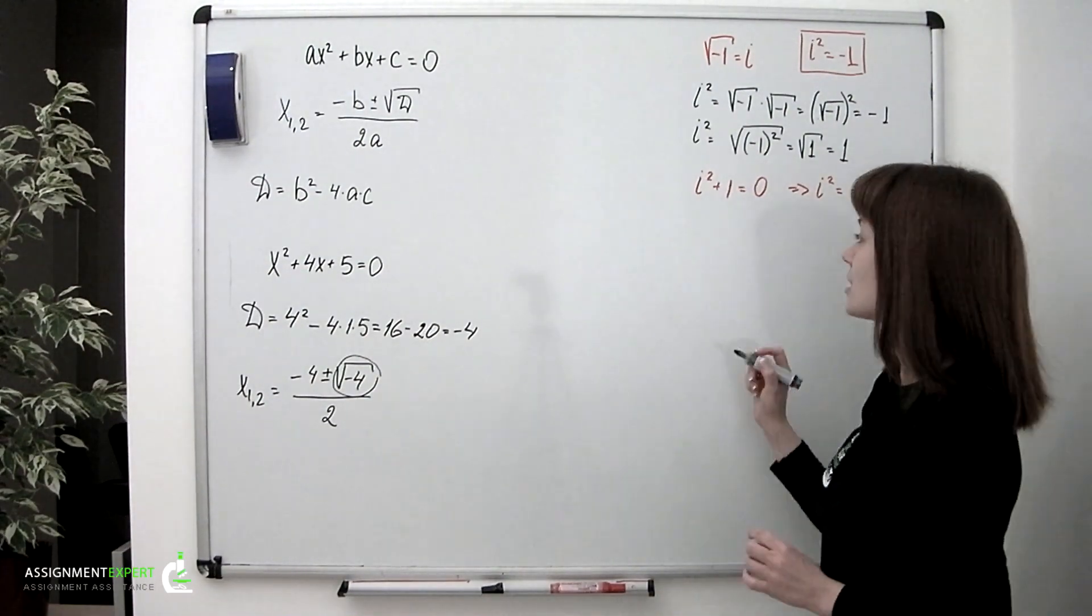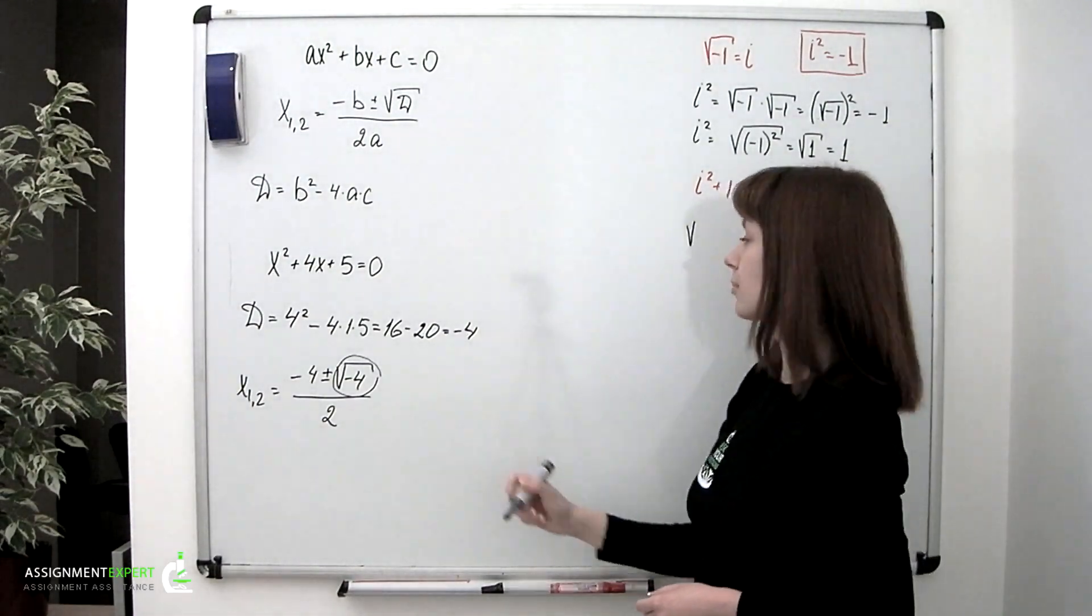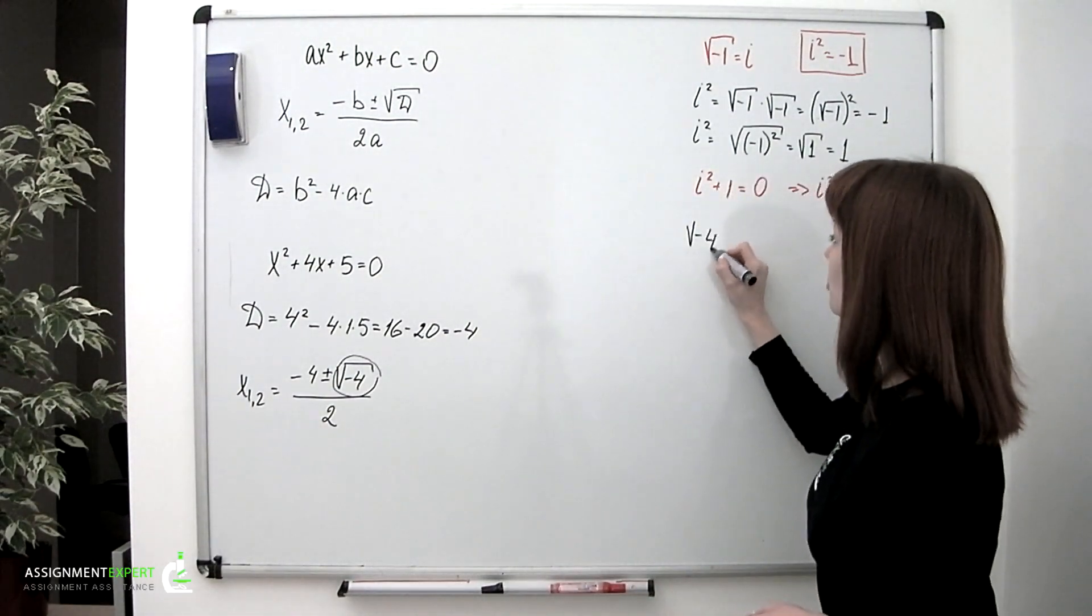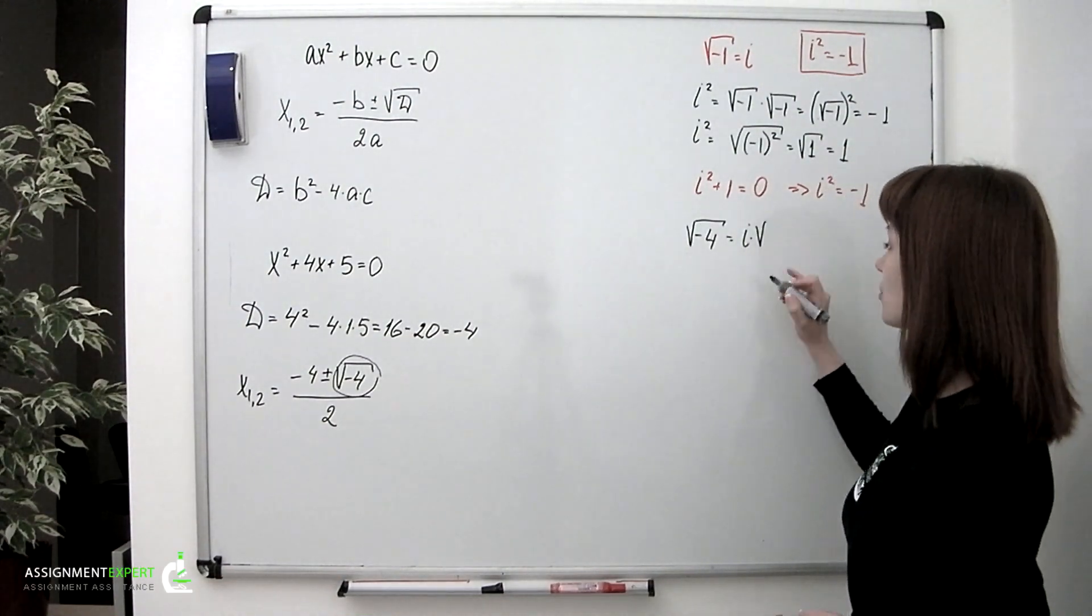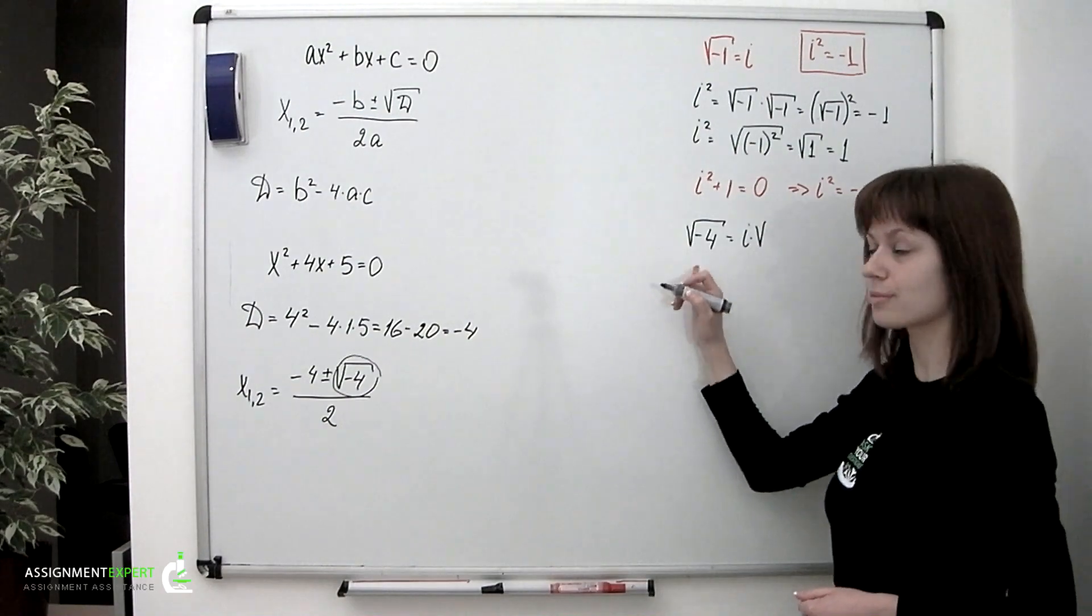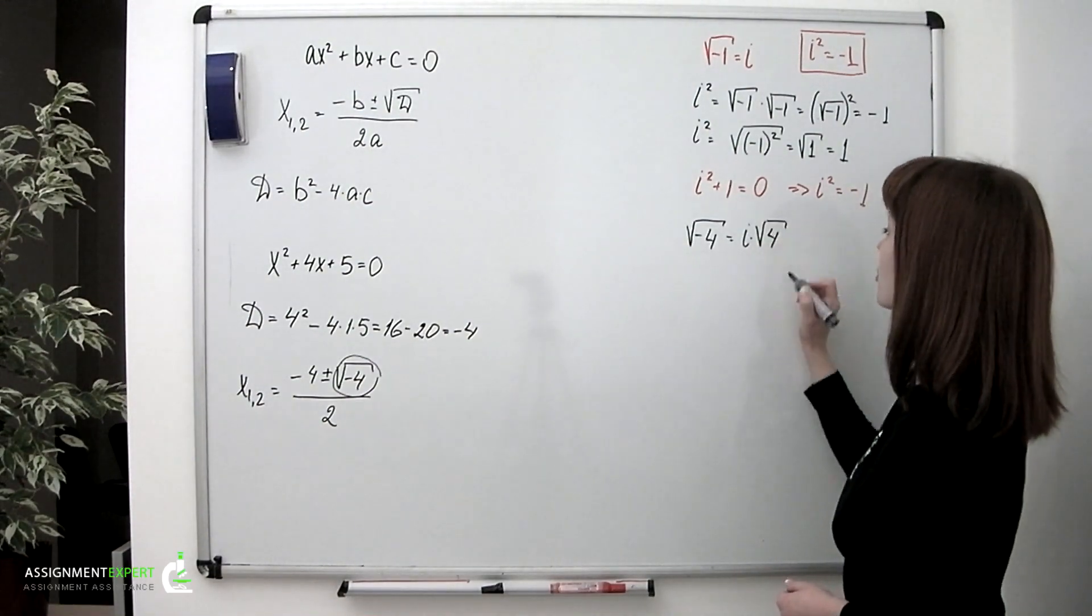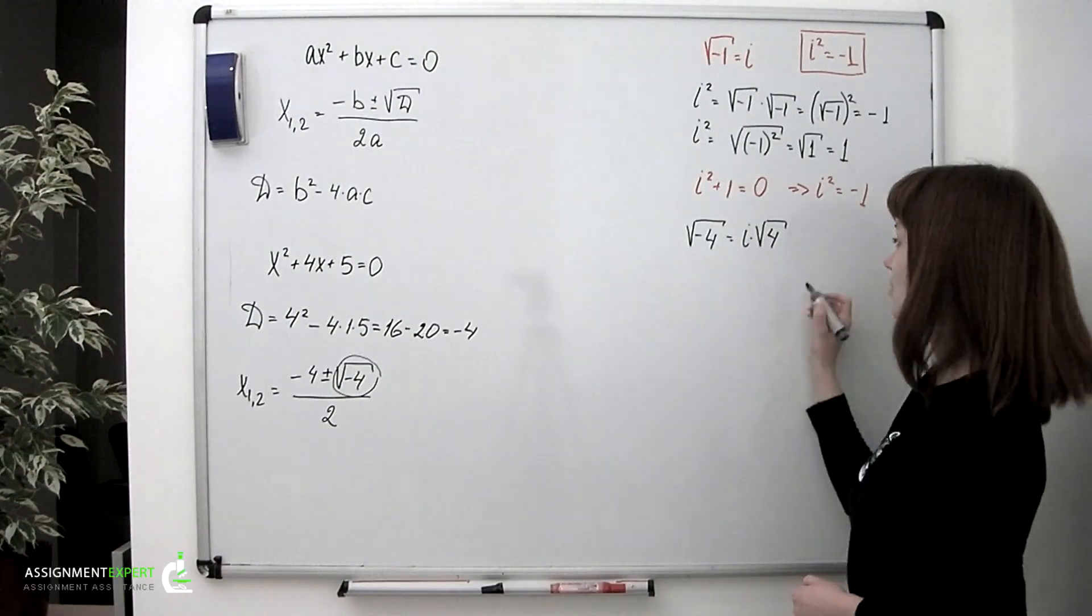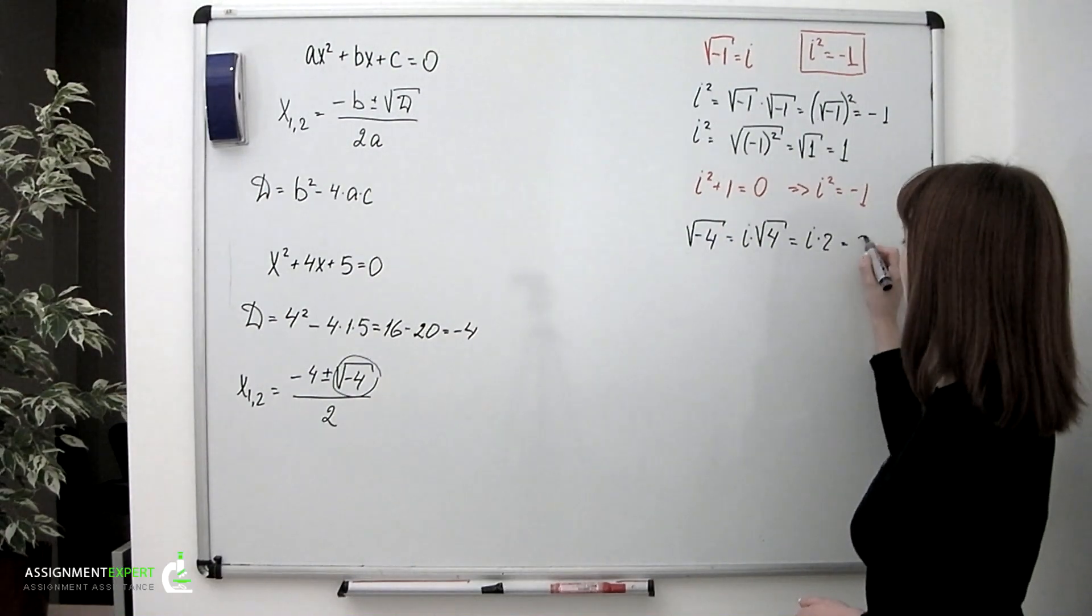Each time you run against a square root of a negative number, like we did in our example, we should immediately replace it with i multiplied by the square root of the corresponding positive number. So we'll have i times √4, which can be calculated, giving us i times 2, or simply 2i.